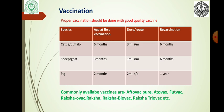Vaccination: Proper vaccination should be done with a good quality vaccine. For cattle and buffalo, first vaccination at 6 months, dose 3 ml intramuscular, revaccination every 6 months. For sheep and goat, first vaccination at 3 months, 1 ml intramuscular, revaccination every 6 months. For pigs, first vaccination at 2 months, 2 ml subcutaneous, revaccination every year. Commonly available vaccines include Aftopor, Autovax, Foot Fix, Raksha Ovac, Raksha Triovac, Biowack, etc.